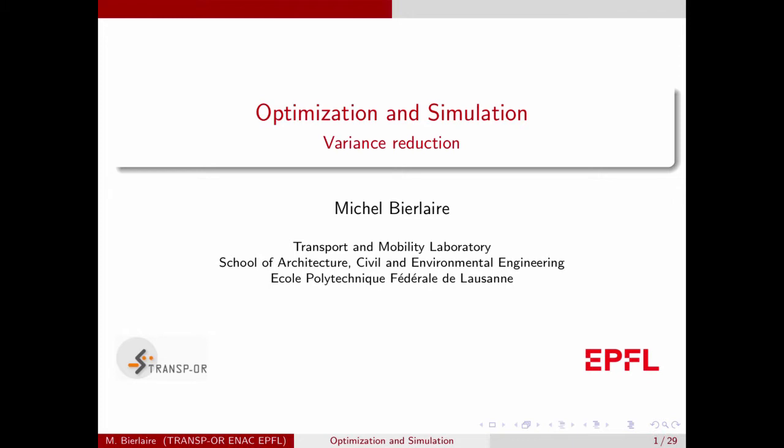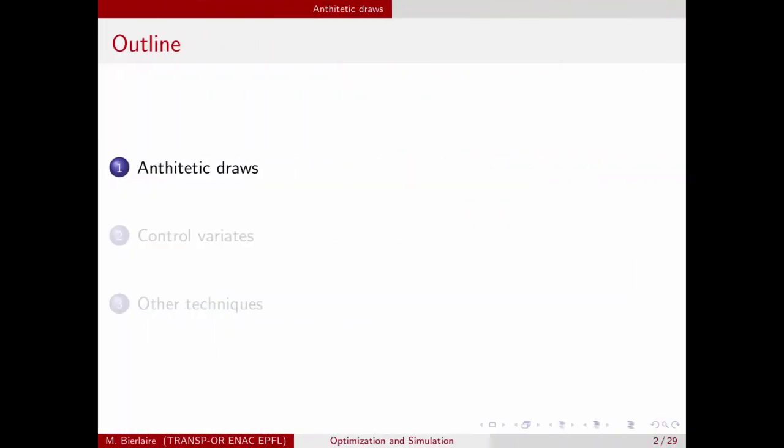Hi, this is Michel Birler. We are continuing our investigation of simulation, and in this lecture I would like to talk about variance reduction methods. The main idea is that the number of draws we have to generate in a simulator is related to the precision we would like to reach. Variance reduction methods allow us to reach the same precision with a lower number of draws, or equivalently, reach a higher precision with the same number of draws. There are two techniques: the first is called antithetic draws, and the second, control variates.